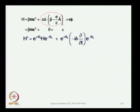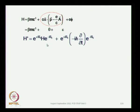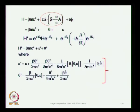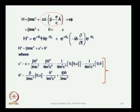Our basic problem is that you have the Hamiltonian which contains the odd operators, and you want to transform it into a different representation using this transformation relation that we have discussed. Our objective is to make the transformed Hamiltonian relatively free from the odd operators - we cannot make it completely free from the odd operators, but as much as we can.